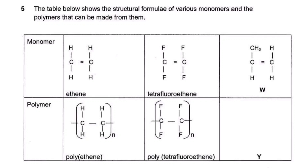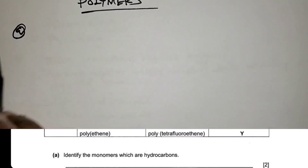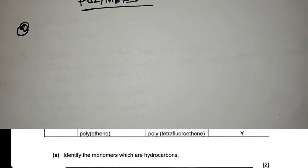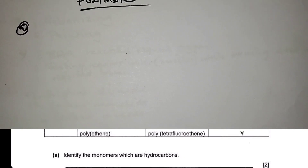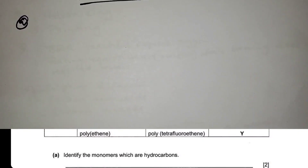Let's revise on polymers using this examination question. The question reads: the table below shows the structural formulae of various monomers and the polymers that can be made from them. The monomers include ethene, tetrafluoroethene, and W; the polymers include polyethene, polytetrafluoroethene, and Y. They are asking us to identify the monomers which are hydrocarbons.